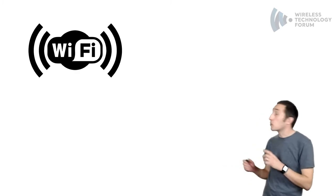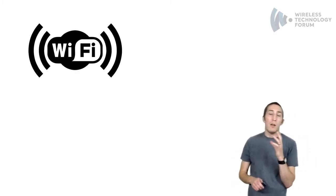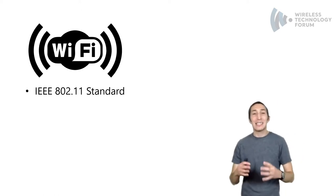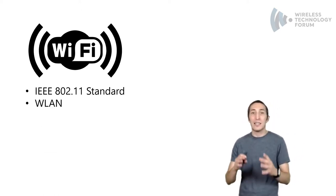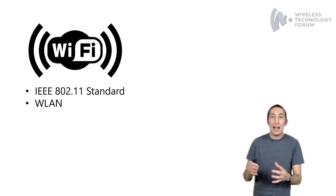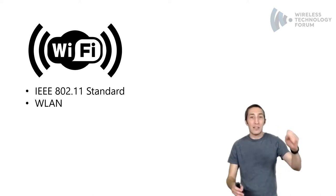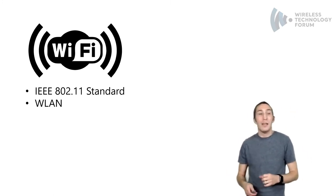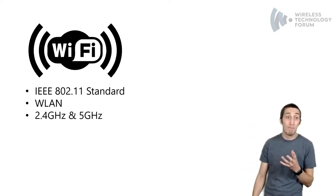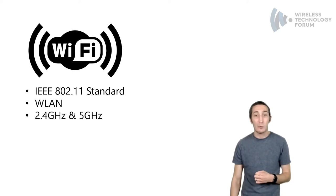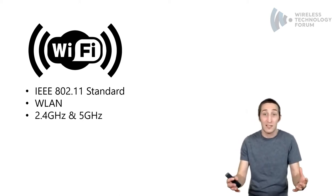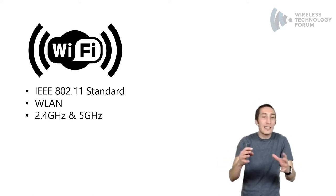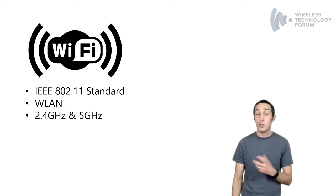Wi-Fi is defined by the IEEE in the 802.11 standard. It defines wireless LAN — wireless local area networking — allowing wireless access to the LAN, no longer needing to be tethered to an Ethernet connection, enabling mobility and network connectivity in difficult places to wire. It operates in the 2.4 and 5 GHz bands, and soon the 6 GHz band as well. More frequency means more channels, more capacity, and more aggregate throughput. Increases in performance and throughput have been a theme of the wireless LAN industry for years.